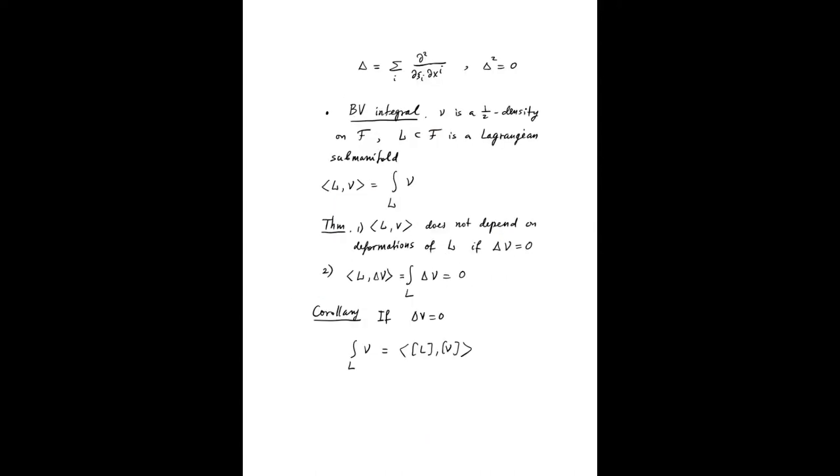In local Darboux coordinates, it's given by this formula. Remember, locally, half densities are functions. So it acts on half densities as functions in local coordinates in this way. And it's clear that delta squared is zero. It satisfies several other properties.